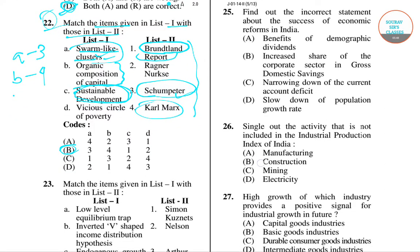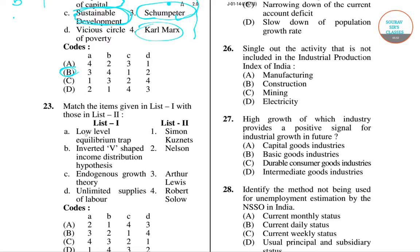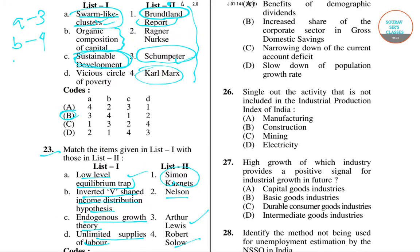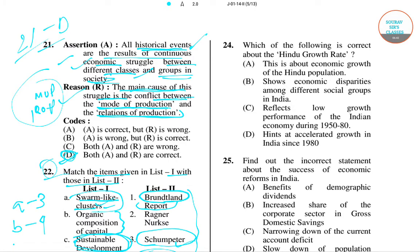Question number 23 is another matching question. Low level of equilibrium trap was given by Nelson; inverted U-shaped income distribution hypothesis was given by Kuznets; endogenous growth theory was given by Robert Solow; and unlimited supplies of labor was given by Arthur Lewis. The right answer for question 23 is option A.